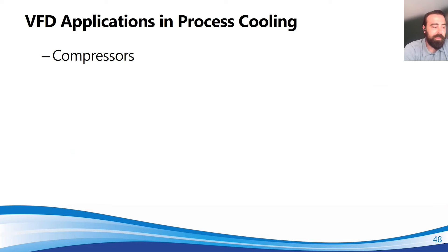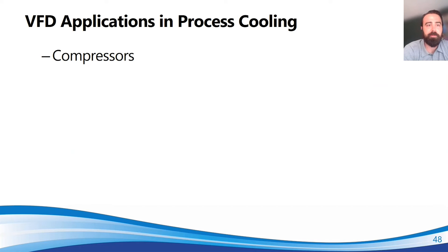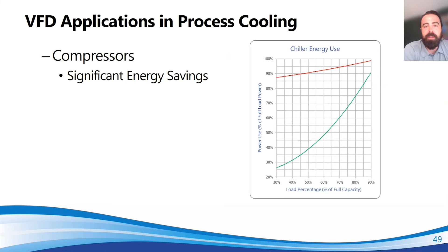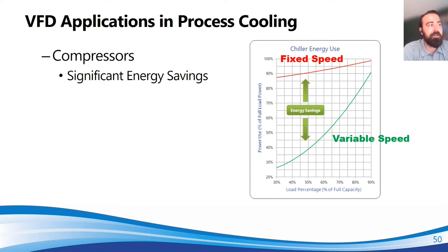Finally, compressors — this is where we see the maximum amount of energy savings. Refrigerant compressors in chillers are the primary consumers of energy in the system. While pump and fan motors also consume energy, the compressor motor consumes significantly more. Putting a VFD on a compressor has an enormous impact on overall system energy consumption. Looking at this graph of chiller energy usage, the red line is a fixed speed compressor and the green line is variable speed. The area between those two lines represents energy saved. As load percentage decreases, variable speed slows further and savings increase — making it very significant.